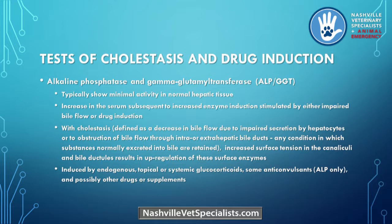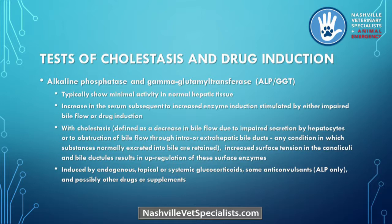Now for cholestasis — ALP is a bit of a friend-enemy. Unlike ALT and AST that are loaded in most hepatocytes, there is actually very little alkaline phosphatase in a normal hepatocyte. These enzymes come up in one of two ways: impaired bile flow or drug induction. So ALP is induced by either decreased bile flow or drug induction, which we're all very familiar with, especially in the world of corticosteroids.